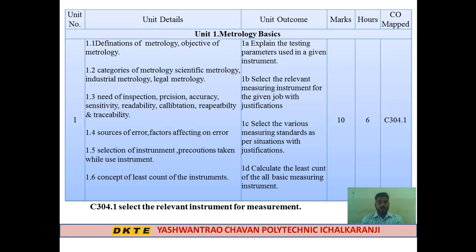Next is 1.4, Sources of Error and Factors Responsible for Errors — errors will be discussed in detail. Topic 1.5 covers the Micrometer, its least count, various types, and handling, which will be studied in detail.